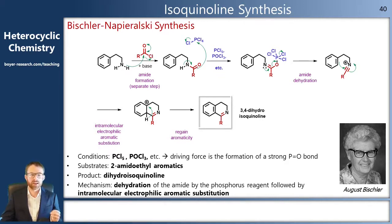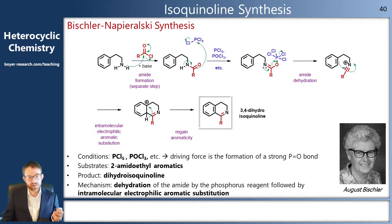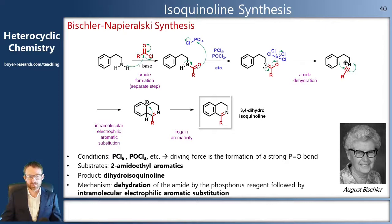Again, we have an intramolecular electrophilic aromatic substitution, where we briefly break the aromaticity of the ring before losing a hydrogen. Because we started with a more oxidized starting material — an amide versus a ketone or aldehyde — we end up with a more oxidized product: the dihydroisoquinoline. Again, this works better with electron-rich aromatic systems.